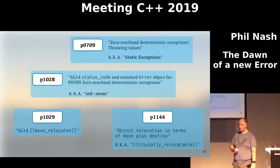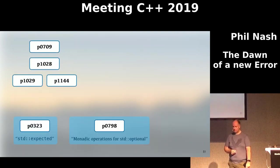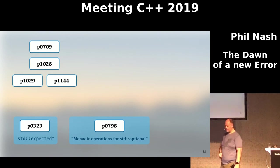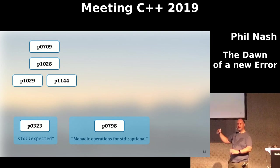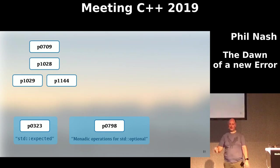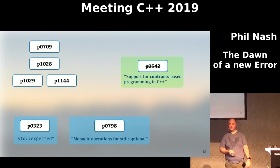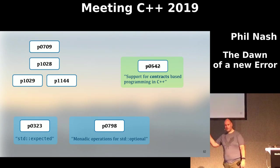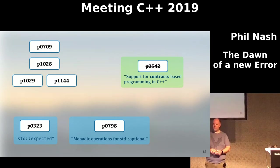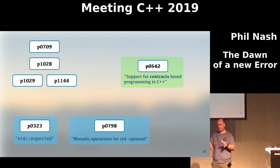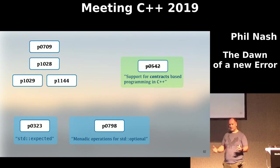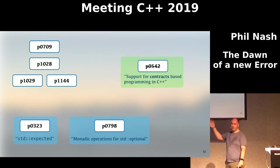We discussed all these proposals and how they fit together: std::expected, the monadic operations for std::optional (and eventually expected), P0709, P1028 (std::error), and P1029/P1144 (trivially relocatable). I want to bring in one other proposal that's now dead: contracts. Famously removed from C++20 in Cologne because it's not quite baked yet. Why include contracts in this discussion? One of the optional parts of P0709 is that if we have contracts in the standard, there's an appetite in the library group to change many places that currently throw exceptions in the standard library to using contracts instead — they're effectively contracts, mostly logic errors.